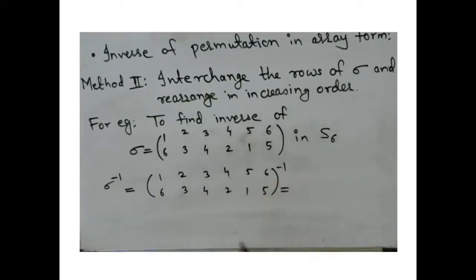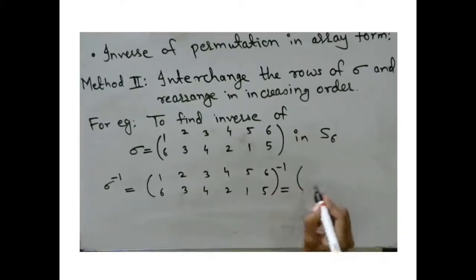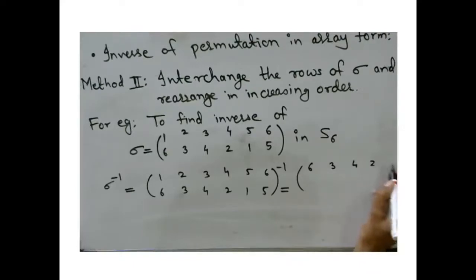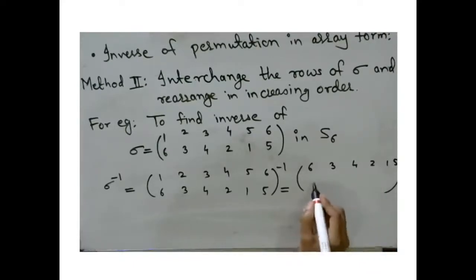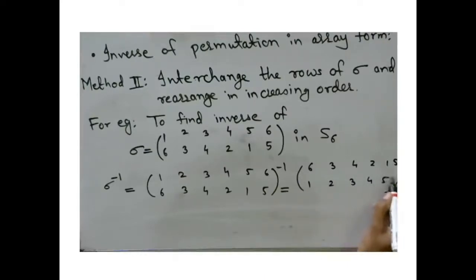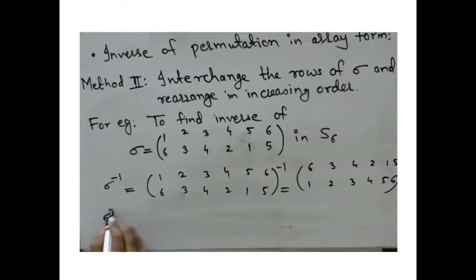To get sigma inverse, we interchange the rows and then rearrange in increasing order. After interchanging, the top row entries (images) are 6, 3, 4, 2, 1, 5 paired with original elements 1, 2, 3, 4, 5, 6. We then rewrite with the top row sorted as 1, 2, 3, 4, 5, 6.